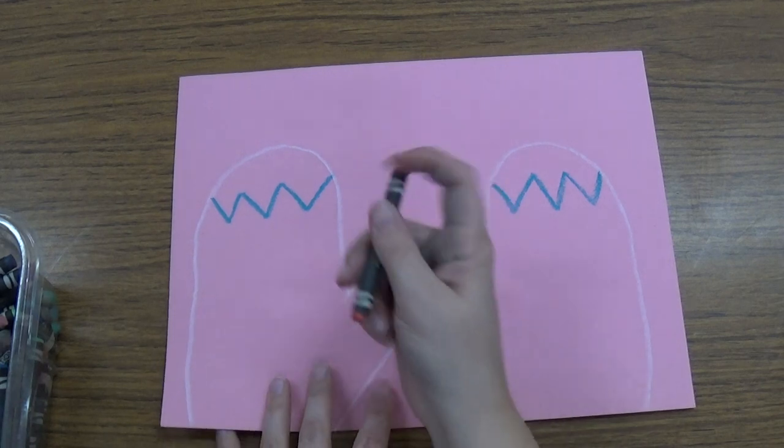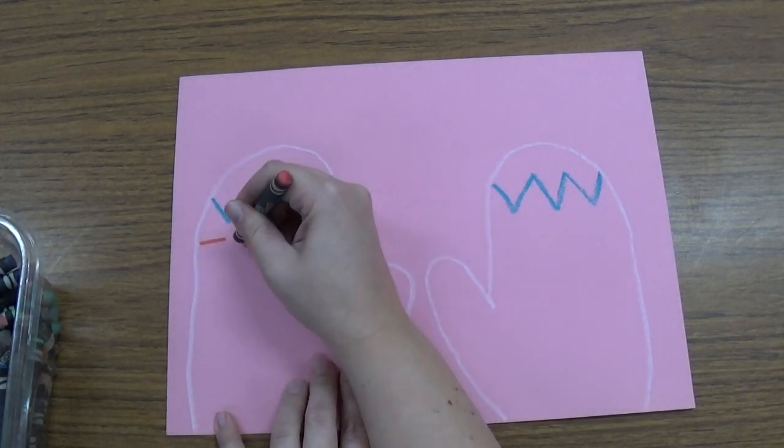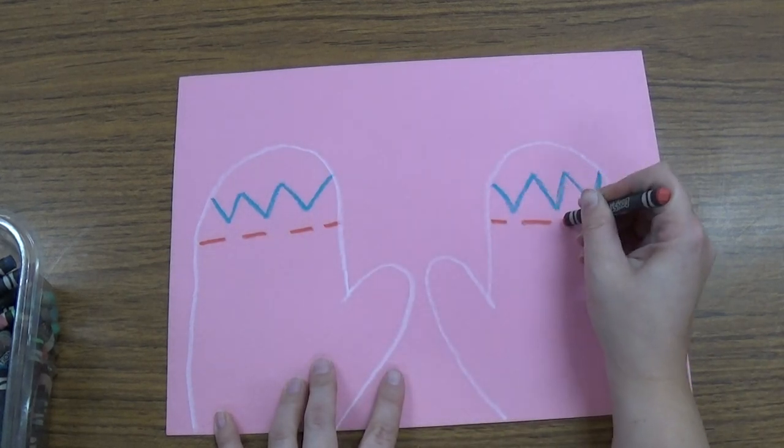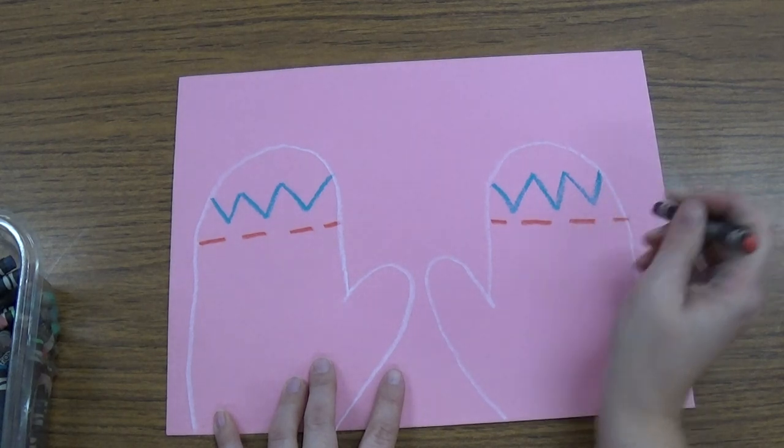And then if I do a red dotted line on this mitten, I'm going to do the same thing on this mitten so that they are symmetrical.